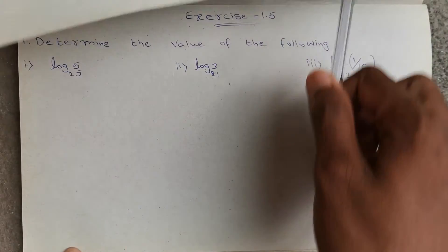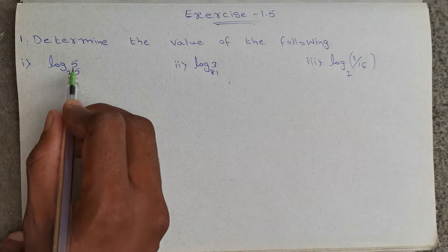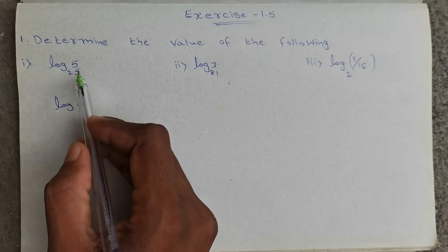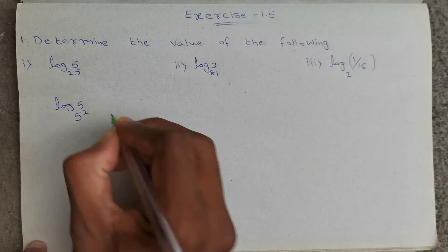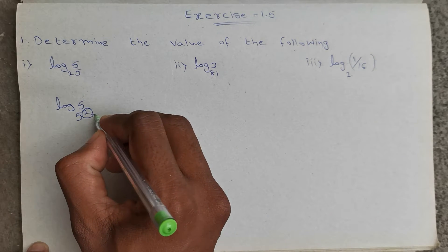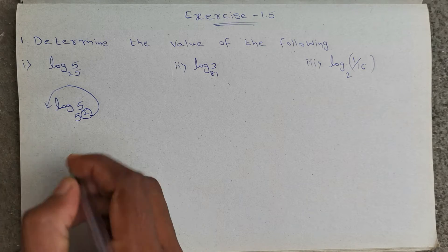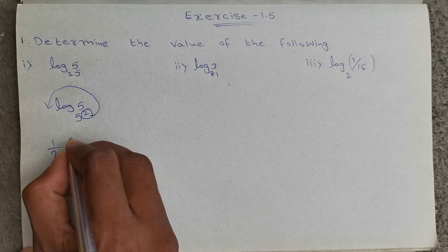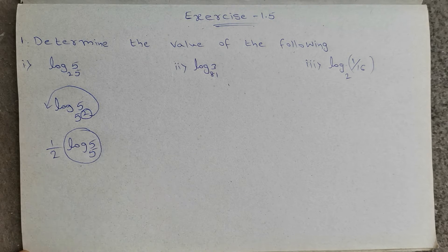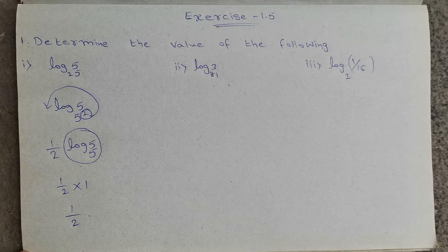Okay, the first bit. Determine the value of the following. Log 5 base 25. Here the base 25 can be written as 5 power 2. The power is for the base, so if we take this to the front it will go as a reciprocal. So 2 reciprocal is 1/2 into log 5 base 5. Log 5 base 5 value is 1. So 1/2 into 1, that is nothing but 1/2.